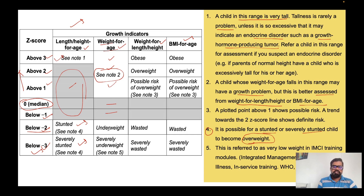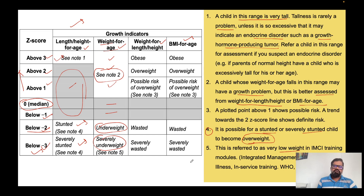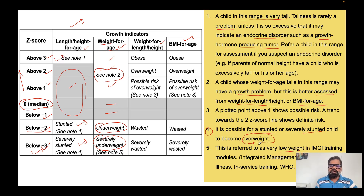If weight-for-age falls below minus two z-score, the child is underweight. If it falls below minus three, it is severely underweight. This is considered very low weight in the IMCI module — Integrated Management of Childhood Illness — and in the Indian version, IMNCI, which stands for Integrated Management of Neonatal and Childhood Illness.